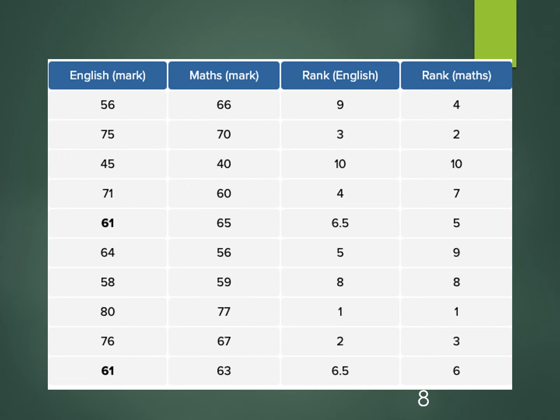The second highest score gets rank 2, and so on. Here we see a joint rank of 6.5 — this is because when two identical values exist in the data, called a tie, we take the average of the ranks they would otherwise occupy. In this table, no rank appears as 6 or 7 individually; instead, we take the average of 6 and 7, which is 6.5, and assign it to each of the tied scores.